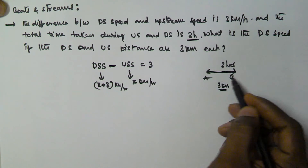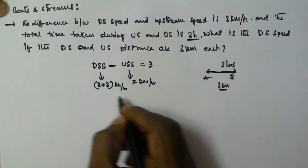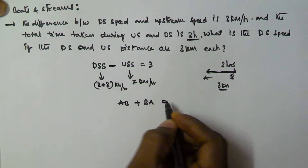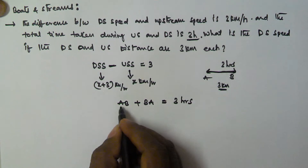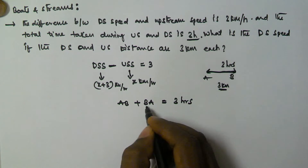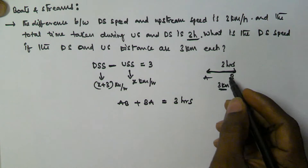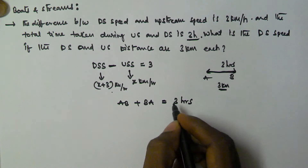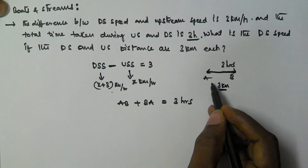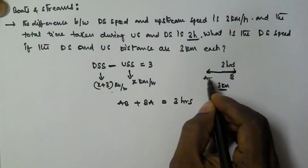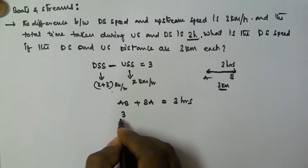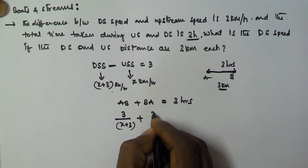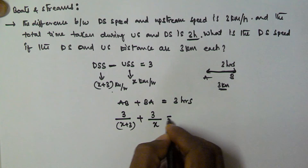The total time is given as 3 hours to travel from A to B and B to A. So the time from A to B plus B to A equals 3 hours. A to B distance is 3 km and B to A distance is 3 km. The speed travelling from A to B is x plus 3 km per hour, and B to A is x km per hour. So: 3 divided by (x plus 3), plus 3 divided by x, is equal to 3.